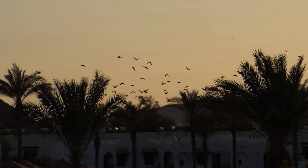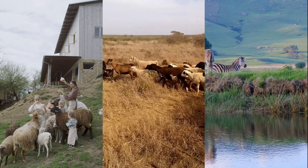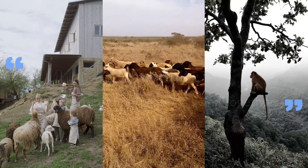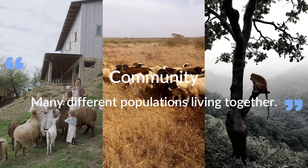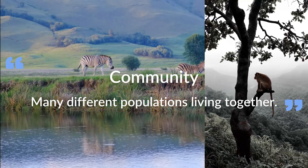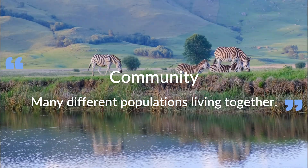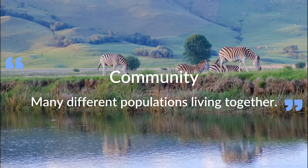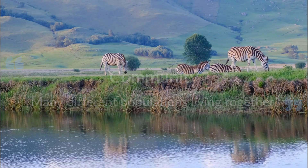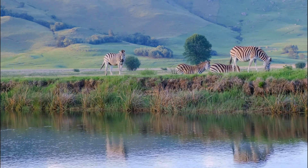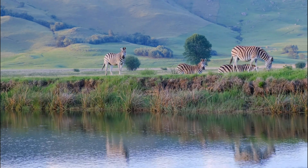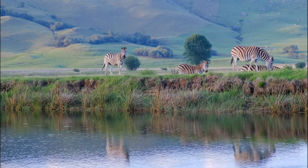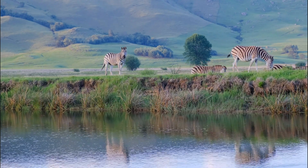Now, picture many different populations living together in a particular place. That's called a community. It's like a bustling neighborhood full of various plants, animals, and other organisms, each contributing to the ecosystem's balance.